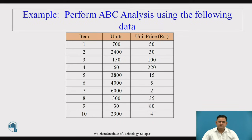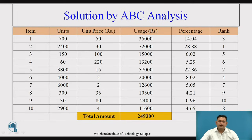This is the example in which we are observing items from 1 to 10, their unit quantities and unit price. Item number 1 has a total quantity of 700 units costing 50 rupees per unit, and similarly for all the remaining 9 items. The first step is to find the overall cost of each item, obtained by multiplying unit price by quantity.